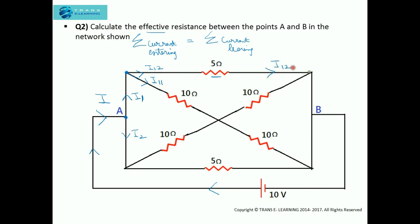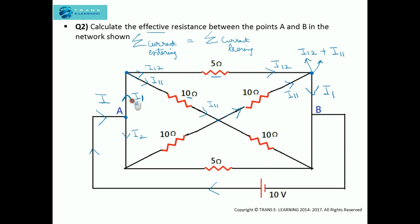I12 will reach this point. Now I11 will flow through the 10 ohm resistor, move through another 10 ohm resistor, and the same current I11 will reach that point. So at this point also we have the current I11. Therefore, I11 plus I12 is equal to I1. You can see that if the current I1 enters from point A, it leaves the circuit and reaches point B.